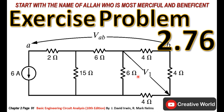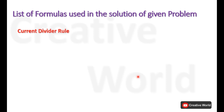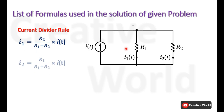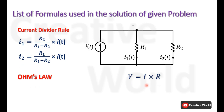While solving this problem we will be using the current divider rule. Basic equations for the calculation of currents I1 and I2 of this particular circuit using the current divider rule are provided here. We will also be using Ohm's law.